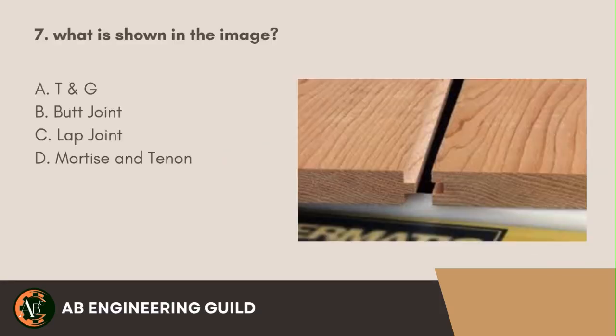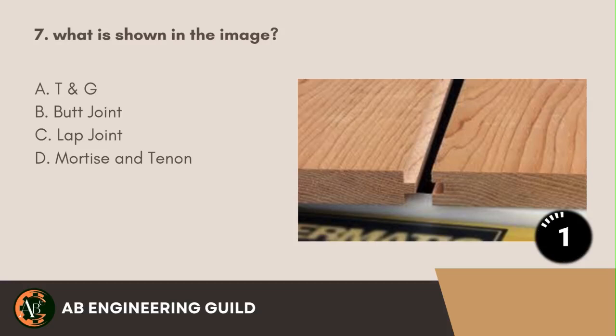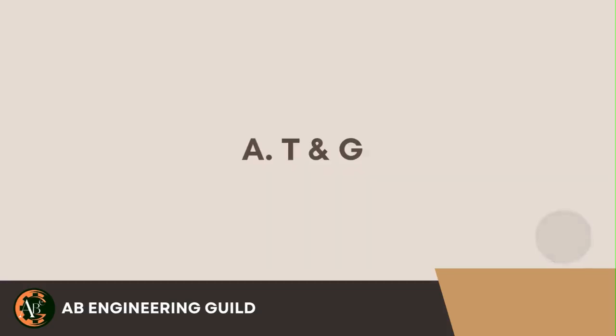Question 7: What is shown in the image? A. T and G. B. Butt joint. C. Lap joint. D. Mortise and tenon. Answer: A. T and G, also known as tongue and groove.